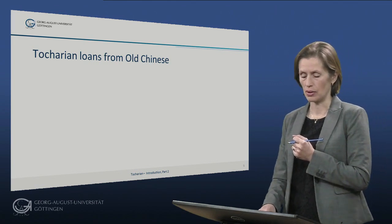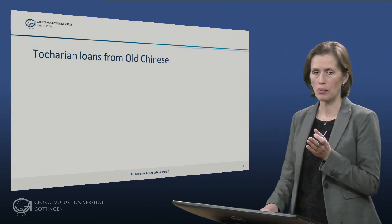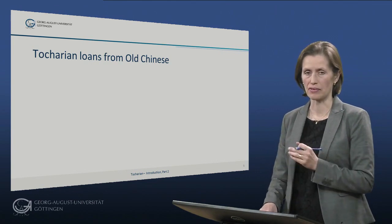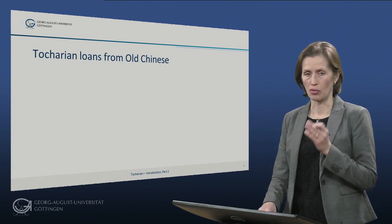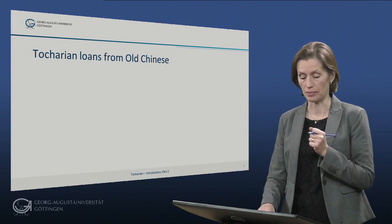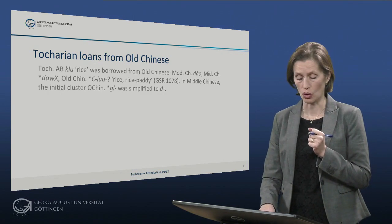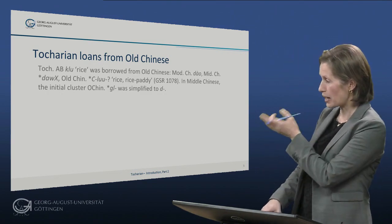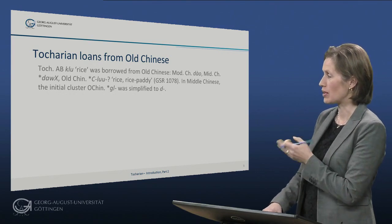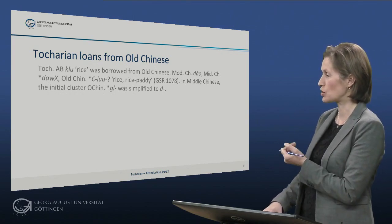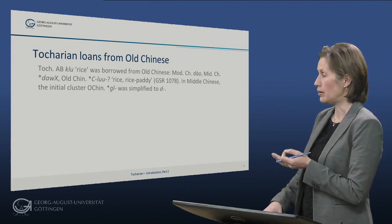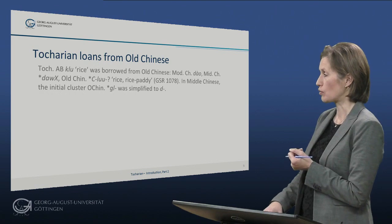There are also loans from Chinese into Tocharian, and they are quite frequent. The most well-known word is the word for rice, and of course it is not strange that the Tocharians borrowed the word for rice from the Chinese, because they probably took over rice cultivation from the Chinese.